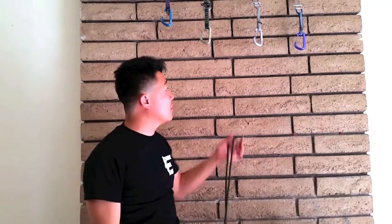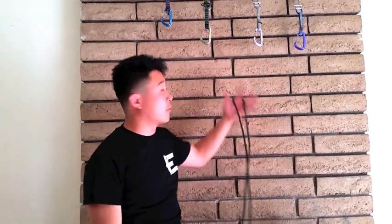So this is the cordalette. I forgot if I talked about it before in my previous video. It's seven millimeter diameter, one really long piece of cord that is tied together into a big loop with a double fisherman, and end to end would be about nine feet.